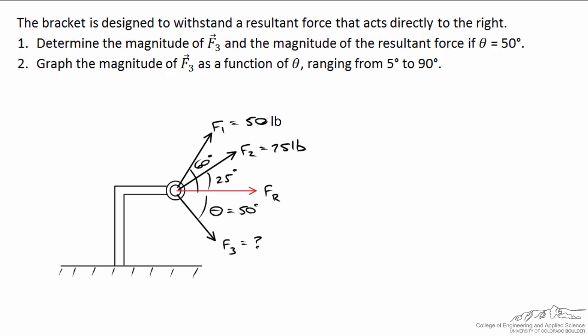We'll make this a two part problem. In the first part we just want to determine the magnitude of F3 if we know that theta is equal to 50 degrees, and in the second part we want to make a graph of the magnitude of F3 as a function of theta, if theta ranges from 5 to 90 degrees. For example, here's theta equals 5 degrees, and theta equals 90 degrees, F3 would be pulling straight down.